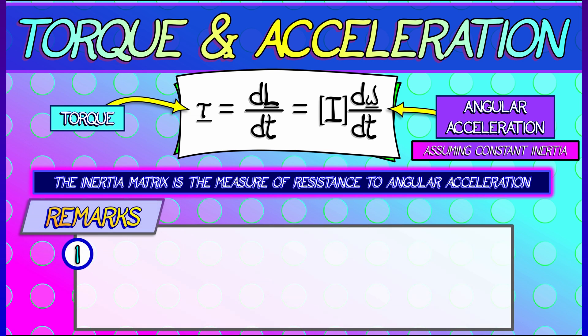That means that this formula, τ = I dω/dt, is the angular version of Newton's second law. Instead of F = ma, we have an angular force, torque.